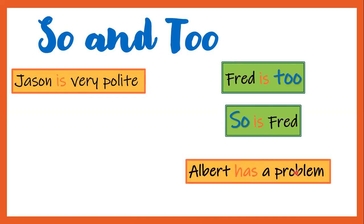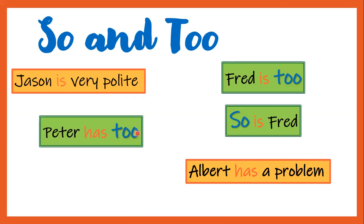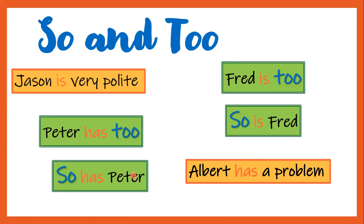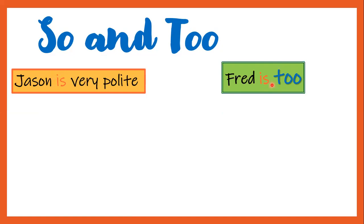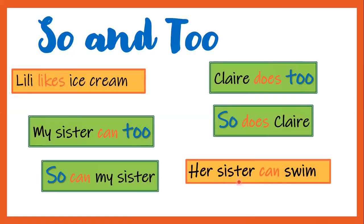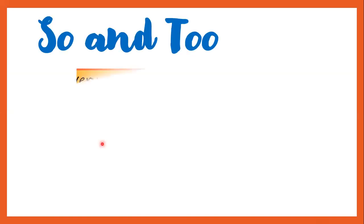'Albert has a problem — Peter has too / So has Peter.' So remember: so and too are used for positive sentences. So goes at the beginning of the sentence before the auxiliary verb, and too goes at the end of the sentence after the auxiliary verb. You have to be careful with the modal verb or auxiliary verb the speaker is using — if the speaker uses the verb to be, you use the verb to be; if the speaker uses a modal verb, you use the same modal verb. Now we are going to continue with neither and either, which we use with negative sentences.